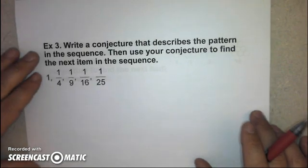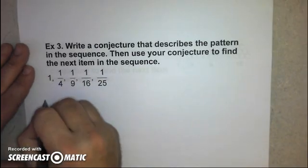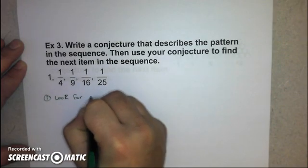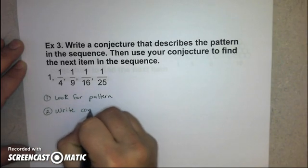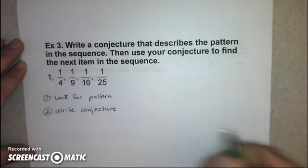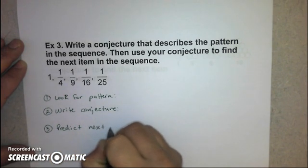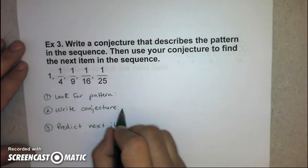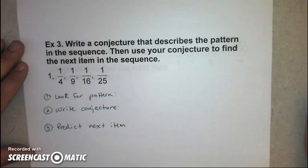Now we can have conjectures made about more numeric patterns again. This is going to be another opportunity for you to write a conjecture about this pattern. So there's two steps here. Step one is to look for a pattern. Step two is to write your conjecture. Remember, that's your conclusive statement. Explain what the pattern is. And then step three, predict the next item in the pattern. I want you guys to pause the video to look at this and try and do these three things.